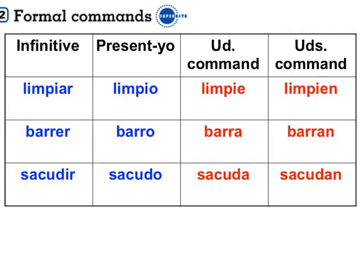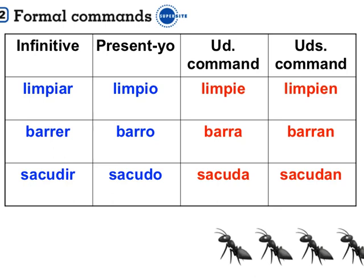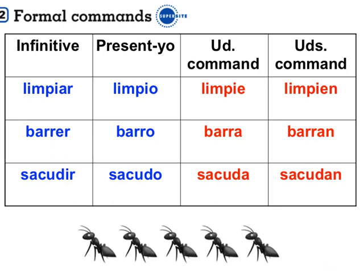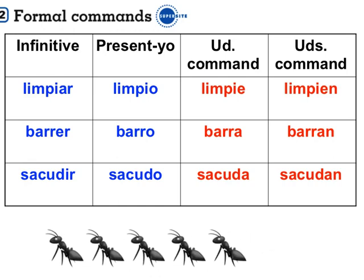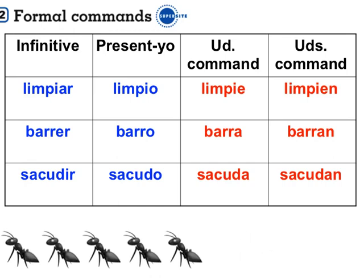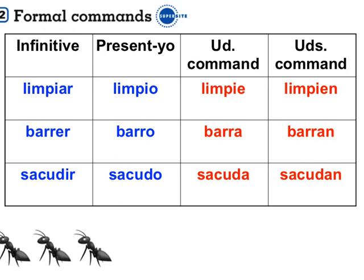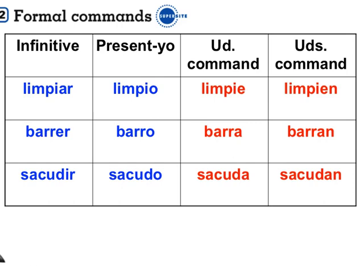Let's practice. Limpiar: the yo form is limpio. Drop the O and add the proper vowel ending — limpie usted, limpien ustedes. Barrer: barro — barra usted, barran ustedes. Sacudir: sacudo — sacuda usted, sacudan ustedes.